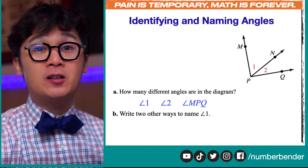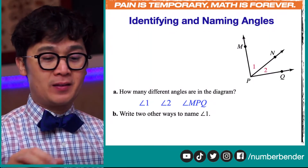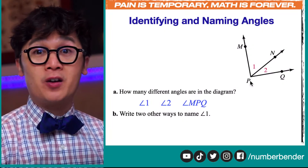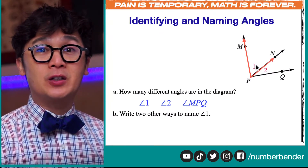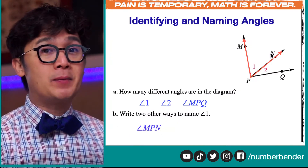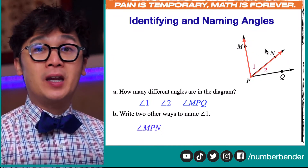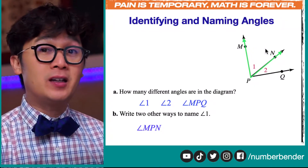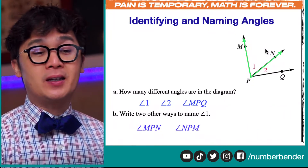And this is how we'll name each angle. So for angle 1, we can name it using points M, P, and N — as angle MPN. Another way of naming angle 1 is starting from the other side, beginning with N, giving us angle NPM.